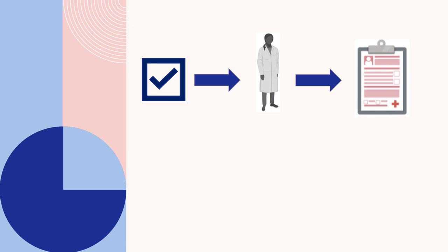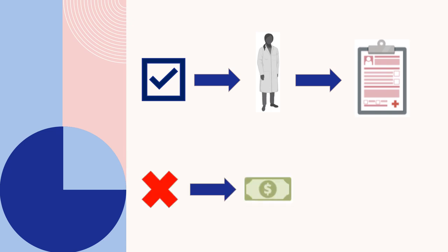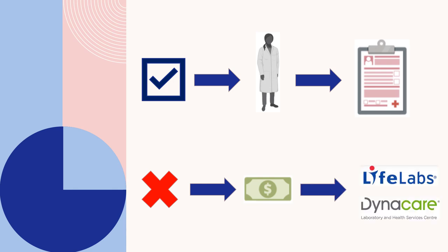If you do not meet any of these requirements, NIPT can be paid for out of pocket. Medical laboratories such as Dynacare and Life Labs offer NIPT alongside genetic counseling services with a referral from your doctor. The cost is currently around $500, but some personal health insurance plans may subsidize this.